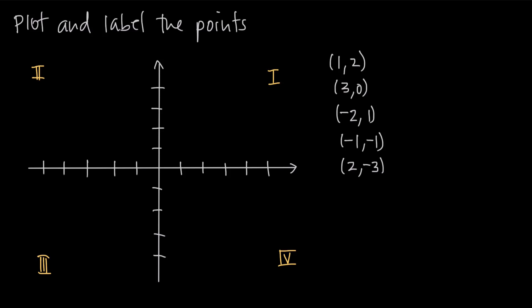In this video, we're going to be talking about the Cartesian coordinate system, which is just a system that we use to graph individual coordinate points like these ones here. In this video, we've been asked to plot and label these points. We also use this system to graph whole equations.